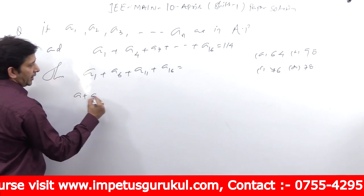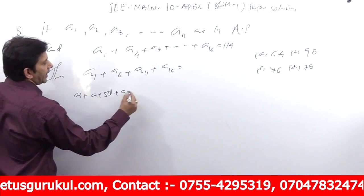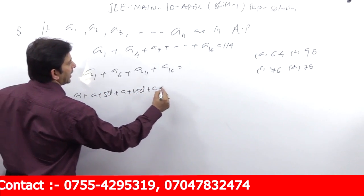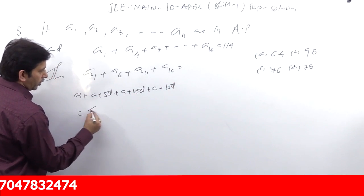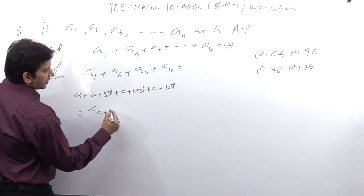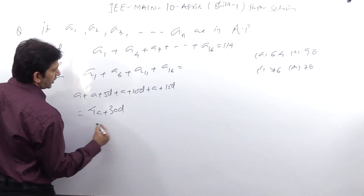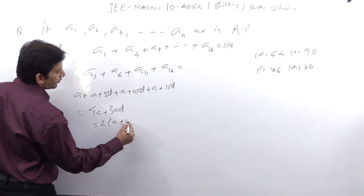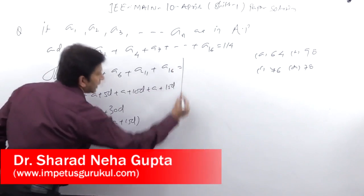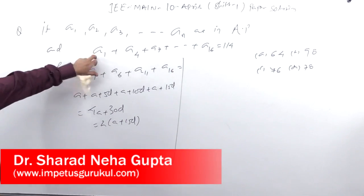This question is simple. This means A, this means A plus 5D, A plus 10D and this is A plus 15D, means 4 times of A plus 30D. Logically we will see two common, A plus 15D.